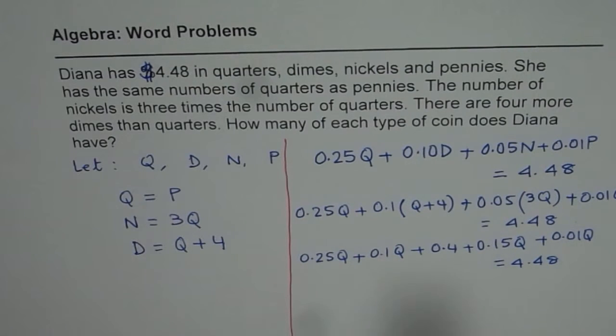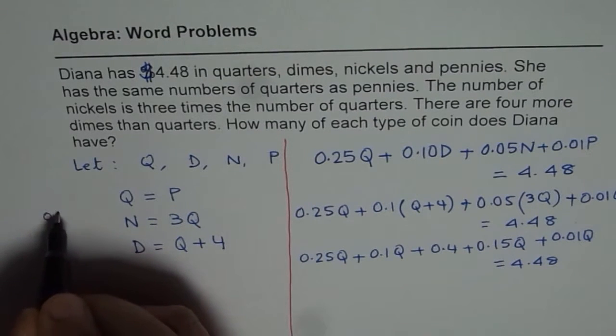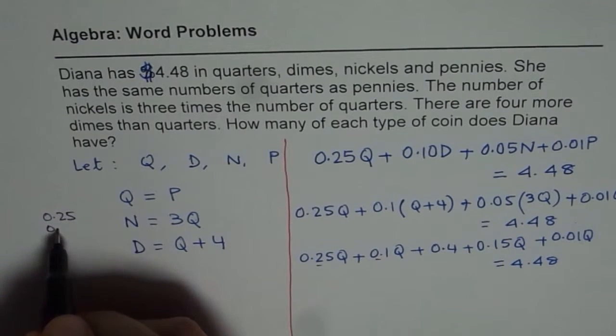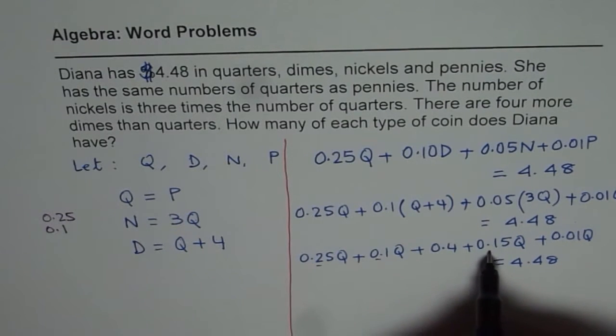Let's combine these quarters now. So it is 0.25. So what you can do is we can write on the side and add them up so that we don't make a mistake here. So we have 0.25 quarters, then 0.1 quarter, and then 0.15, and then 0.01.